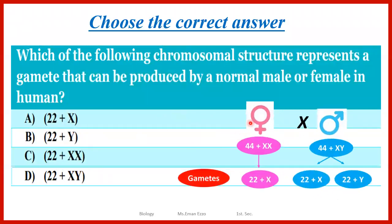The female produces only one type of gamete, which is 22 + X. But the male has two types of gametes: 22 + X and 22 + Y. So which gamete can be produced by either male or female? The answer is number A — 22 + X — because this can be produced by the female and also can be produced by the male.